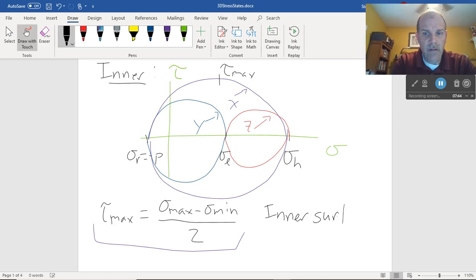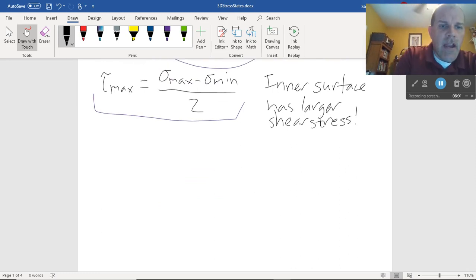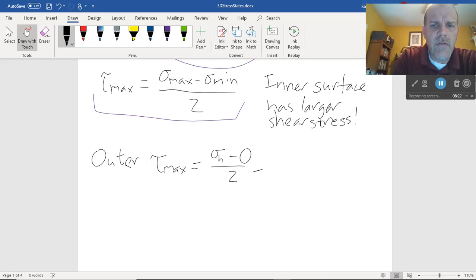The inner surface has the larger shear stress. Why is that? Let's use this equation. At the outer surface, tau max equals, I've got my equation, sigma max. The biggest principal stress is the hoop stress. Minus sigma min. Well, for the outer surface, that's sigma r. That's zero at the outside. Over two equals sigma h over two. And if you want to get really clever about it, you can say that's the longitudinal stress. That's a pretty good thing to see. So that's what's happening at the outside surface.